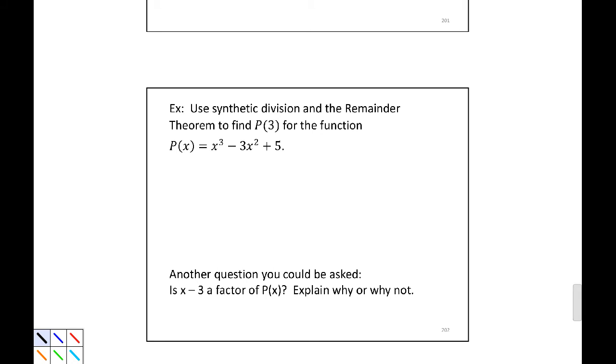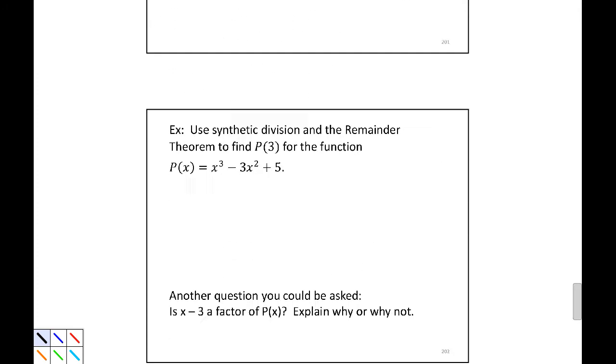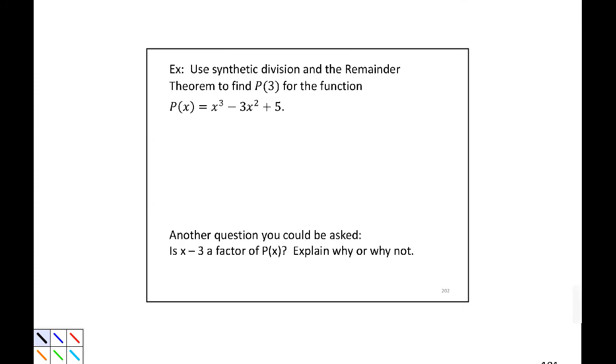Use synthetic division and the remainder theorem to find p of 3 for the function p of x equals x cubed minus 3x squared plus 5. Well, I'm going to fill in my values. I have 1 minus 3. I'm missing an x term, so 0 and 5.